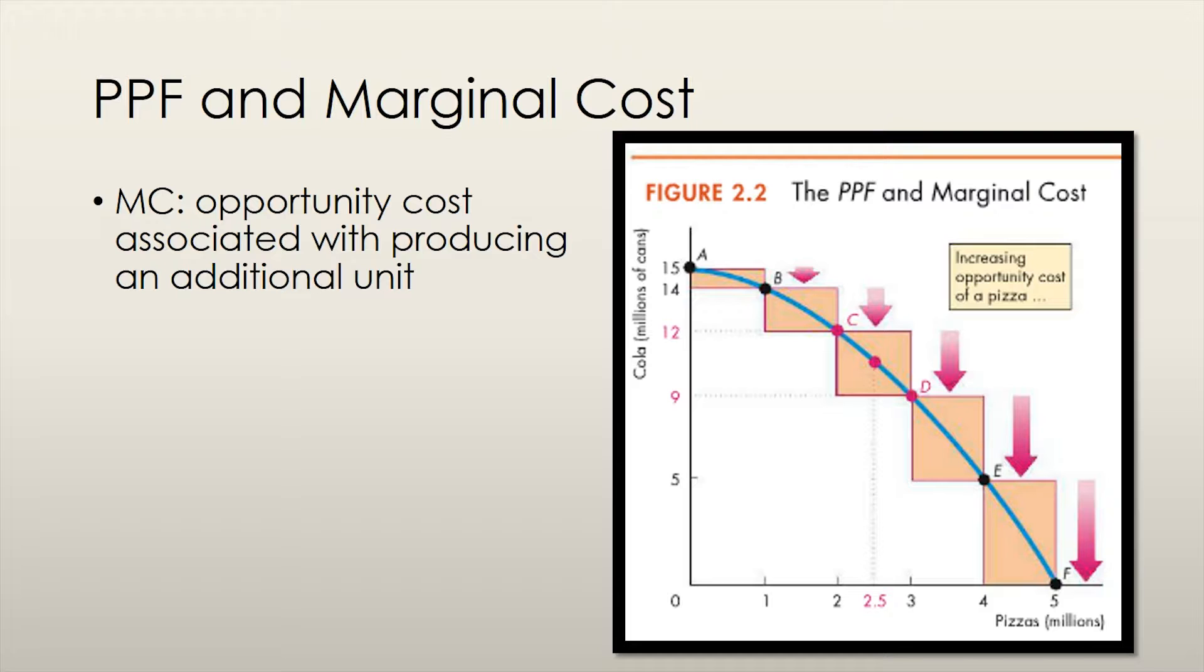The first new concept is known as marginal cost. Marginal cost is the opportunity cost associated with producing an additional unit of a good. In the graph to the right, we are assuming that we have an economy that produces only cola and pizza. The opportunity cost of producing more pizza is different on every point on the frontier.